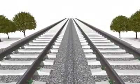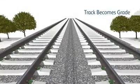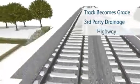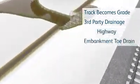Track drainage could end when the railway becomes at grade, and it connects to a third-party drainage, for example, highway drainage or an embankment when it connects to embankment tow drains.